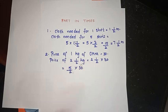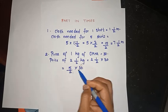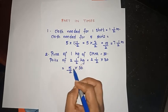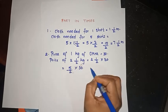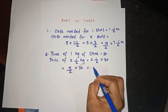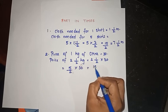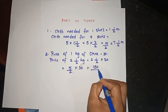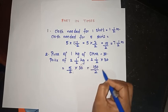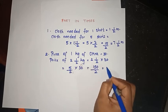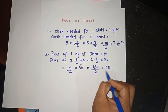5 by 2 into 30 — we get 150 by 2, which equals 75 rupees.